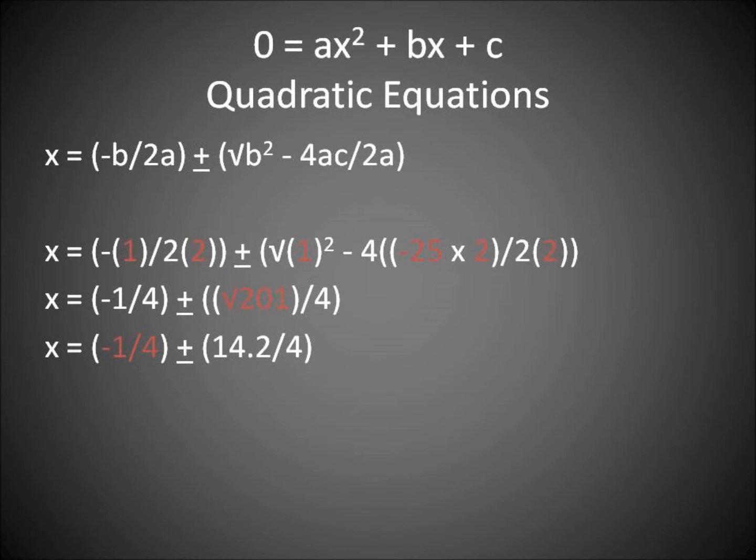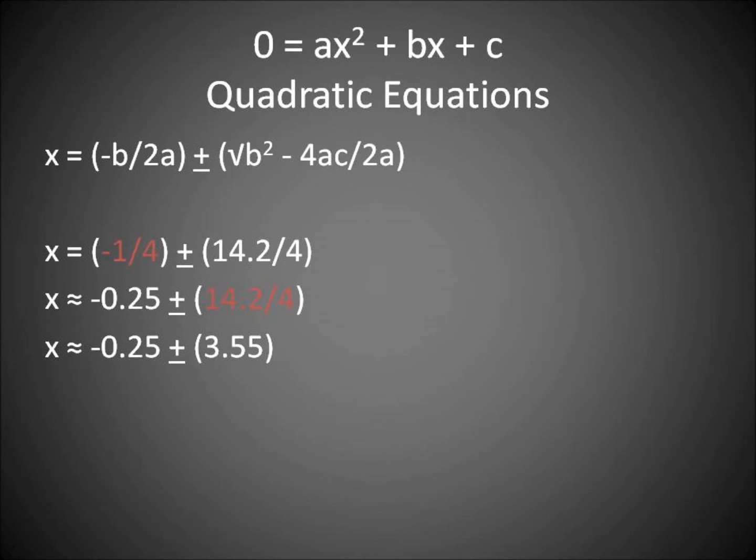We will have x equals negative 1 over 2 multiplied by 2 plus or minus square root of 1 squared minus 4 times 2 times negative 25 over 2 times 2. This is about equal to negative one-fourth plus or minus 14.2 divided by 4, which equals about negative 0.25 plus or minus 3.55.